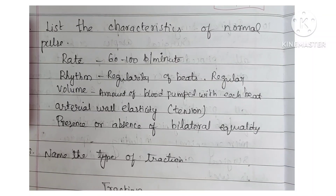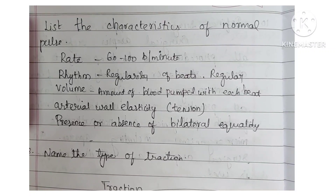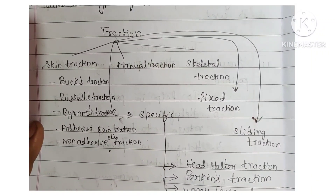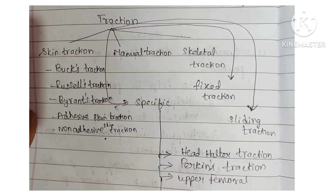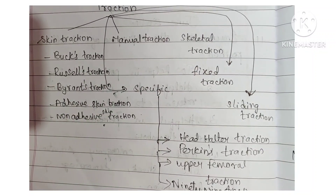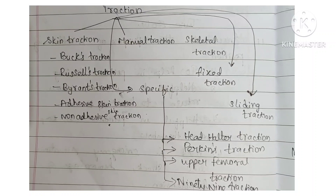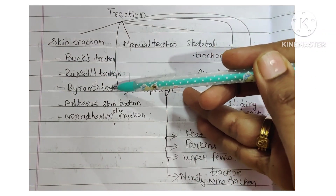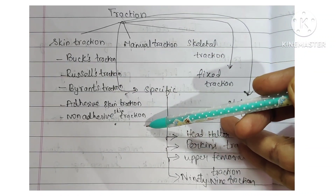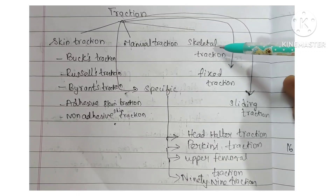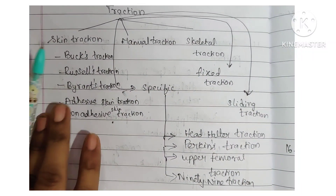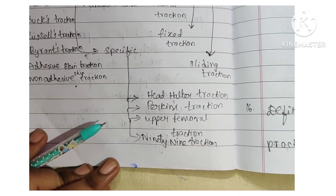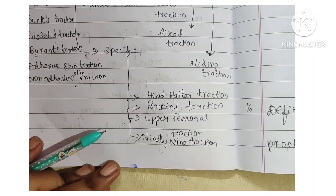Next: name the types of traction. Under traction you have skin traction, manual traction, and skeletal traction. Under skin traction you have Buck's traction, Russell's traction, Bryant's traction, adhesive skin traction, and non-adhesive skin traction. Under specific traction: fixed traction, sliding traction, head halter traction, Perkin's traction, upper femoral traction, and 90-90 traction.